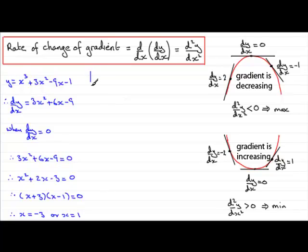But we need to classify whether these stationary points are maximums or minimums. So to do this, by this method, what we need to do is find d2y by dx squared. In other words, differentiate dy by dx with respect to x one more time. And if we do that for the first term, we're going to get 6x. And if we differentiate 6x with respect to x, we get plus 6.